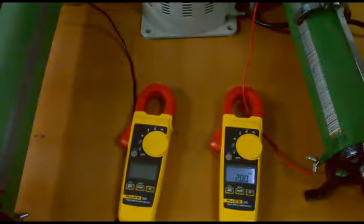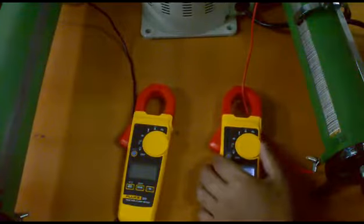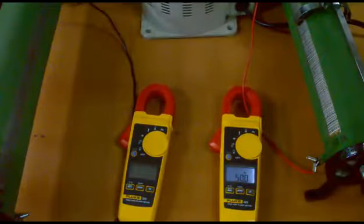We can also check the frequency by flicking the knob to the frequency mode. As expected, we see a value of 50 hertz on the meter.